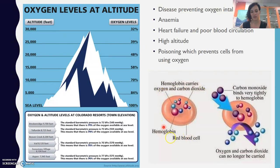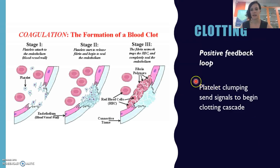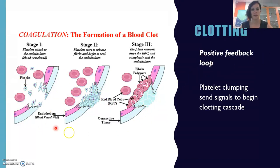Hemoglobin carries oxygen and carbon dioxide, but carbon monoxide — which you can also get from breathing in car fumes — binds very tightly to hemoglobin, so oxygen can't be carried. Clotting is a positive feedback loop: platelets clump together, sending signals to begin a clotting cascade with all those proteins and clotting factors in the blood. Once started, the body keeps doing it over and over again until it has naturally resolved itself.